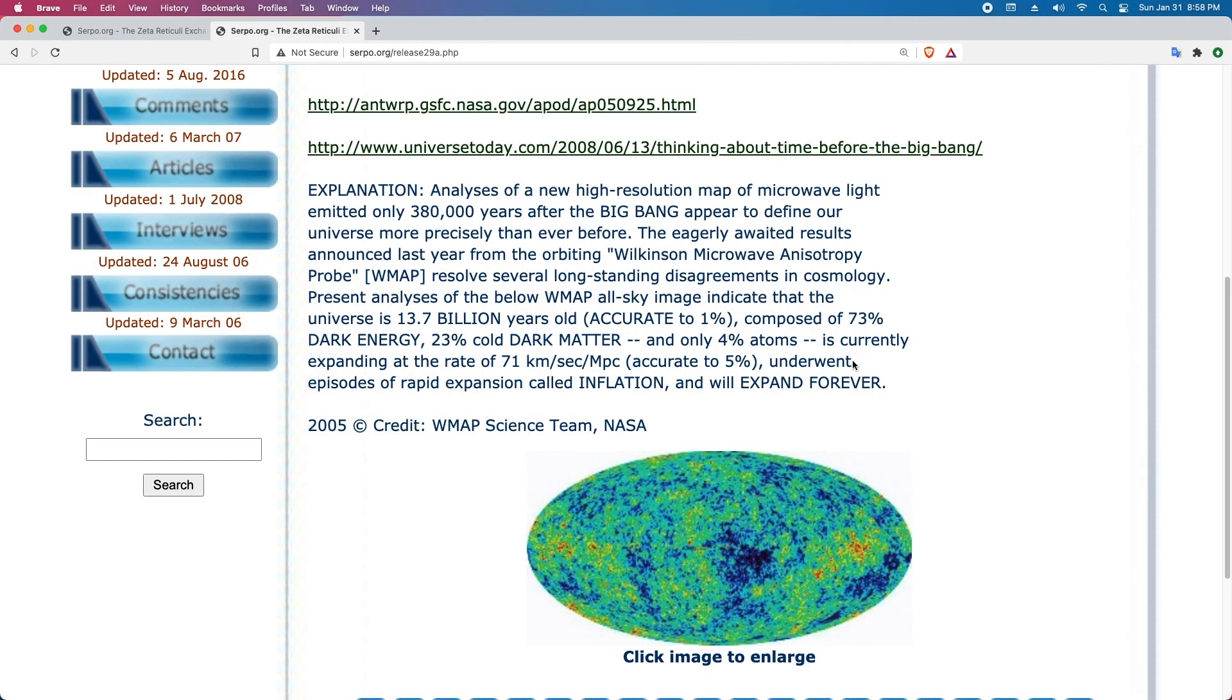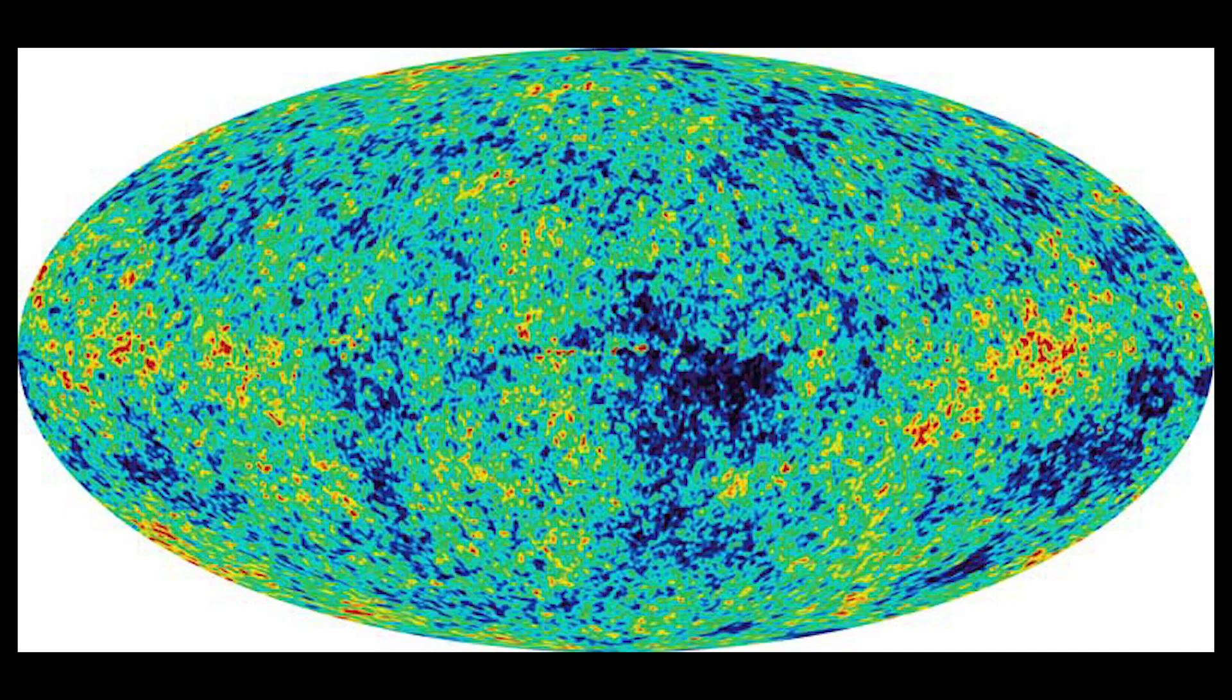Explanation: Analysis of a new high-resolution map of microwave light emitted only 380,000 years after the Big Bang appears to define our universe more precisely than ever before. The eagerly awaited results announced last year from the Orbiting Wilkinson Microwave Anisotropy Probe, WMAP, resolved several long-standing disagreements in cosmology.